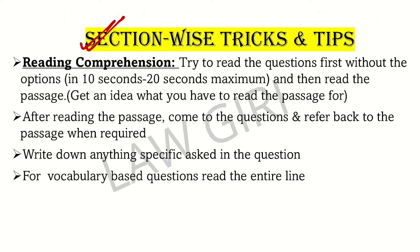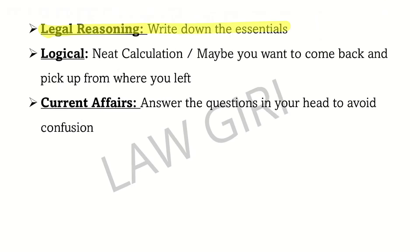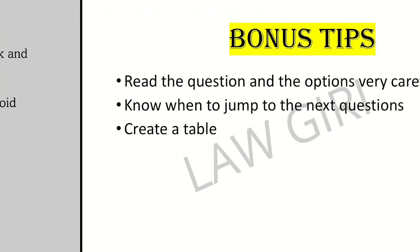Section-wise tricks: In reading comprehension, first read the questions in 10 to 20 seconds without options, then read the passage — so you have an idea of what you are looking for. In legal reasoning, write down the essentials on your rough page. In logical reasoning, do neat calculations and make clean tables. In current affairs, answer the question in your mind before reading the options, because sometimes the options confuse you.